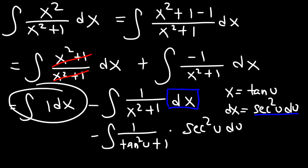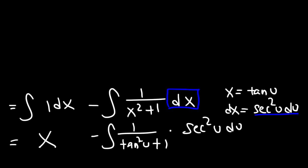The integral of 1 dx is just x. We can replace 1 + tan², or tan² + 1, with sec². It's one of the three Pythagorean identities you need to know.